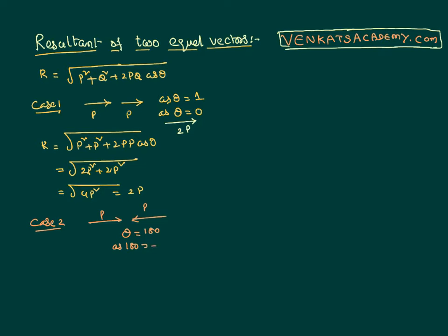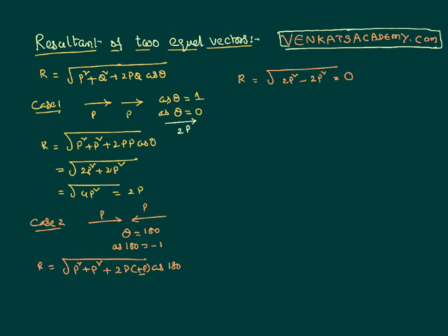We know that cos 180° equals −1. Applying this in the resultant formula: the square root of p squared plus p squared plus 2p·p·cos 180°. Since cos 180° = −1, the result is the square root of 2p squared minus 2p squared, which equals 0. That means these two vectors cancel each other out completely.